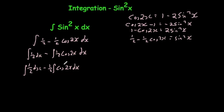Now let's integrate cos 2x. If you're good at this, you'll recognise it gives one half sine 2x, and then multiplying by the half out front gives minus one quarter sine 2x. If you're not too confident with that, let me show you how to do it.